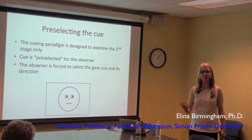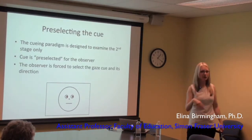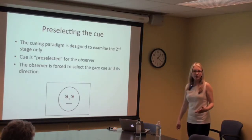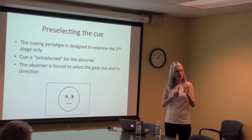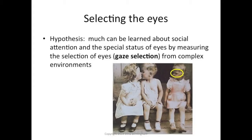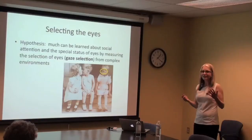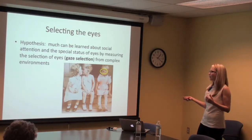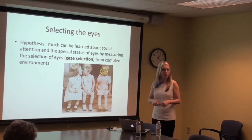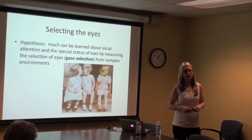There is really no selection process in the cueing paradigm, because the cue itself — the face — has been pre-selected for the observer. There's nothing else on the screen to select; it's already in the center. They're forced to select this cue and its direction. That's fine, because that's what the paradigm was designed to test. My hypothesis was that we're missing out on a really important aspect of social attention by not measuring this first stage — the initial selection of social information.